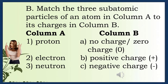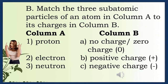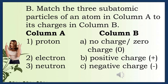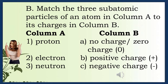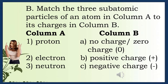Match the three subatomic particles in column A to their charges in column B. Number 1, proton: positive charge. Number 2, electron: negative charge. Number 3, neutron: no charge, or zero charge.